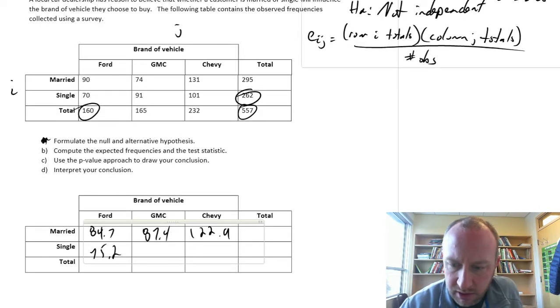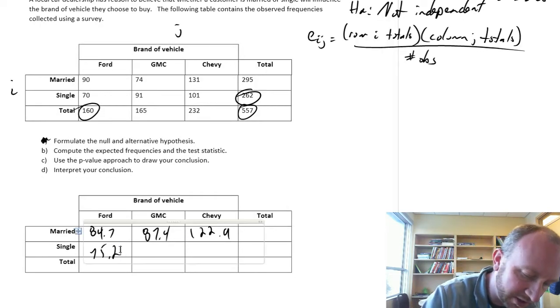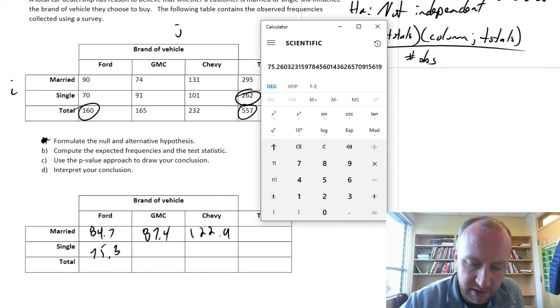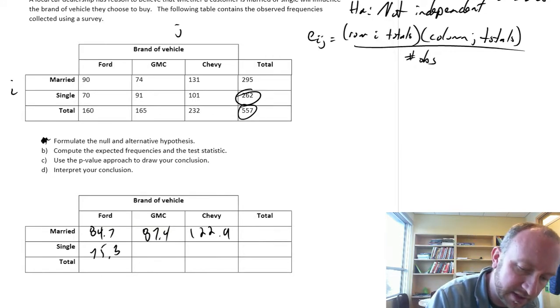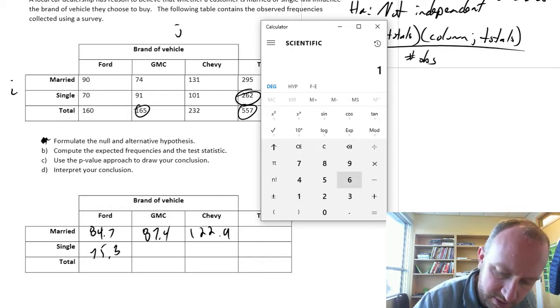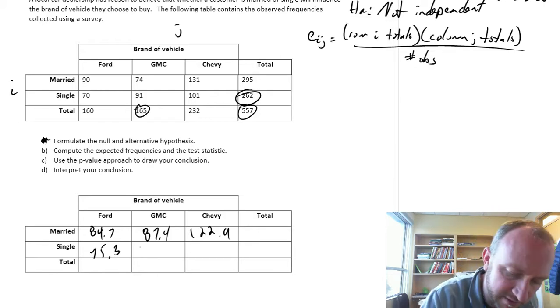And let's keep going. Oh, 75.3, I guess, if I round it properly. Okay, and then let's go back here. Now we're at 165. 165 times 262, 77.6.